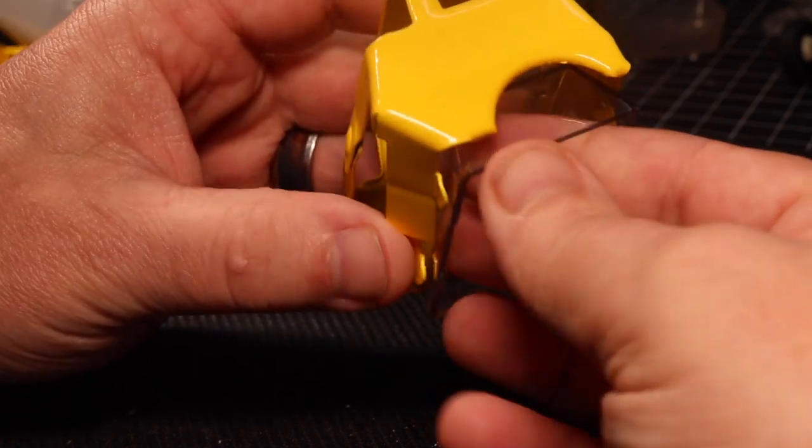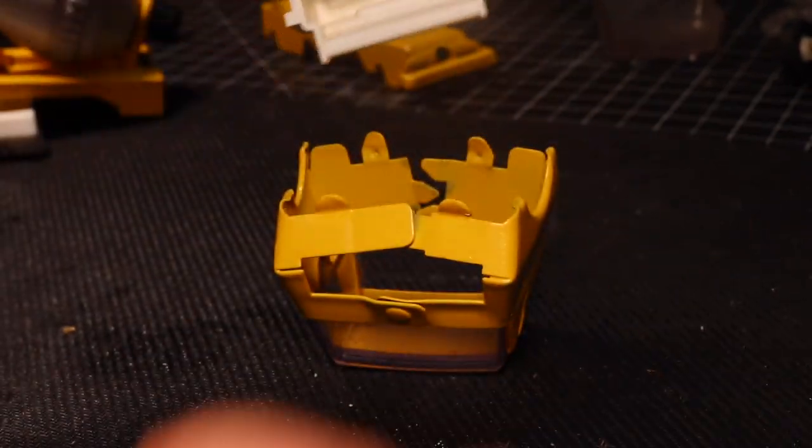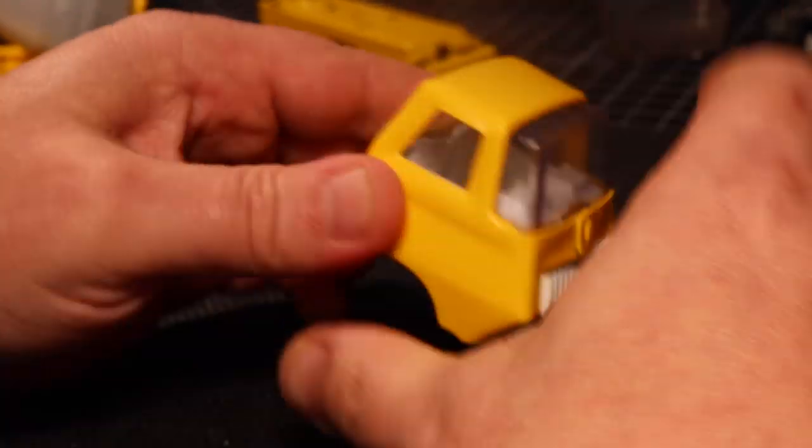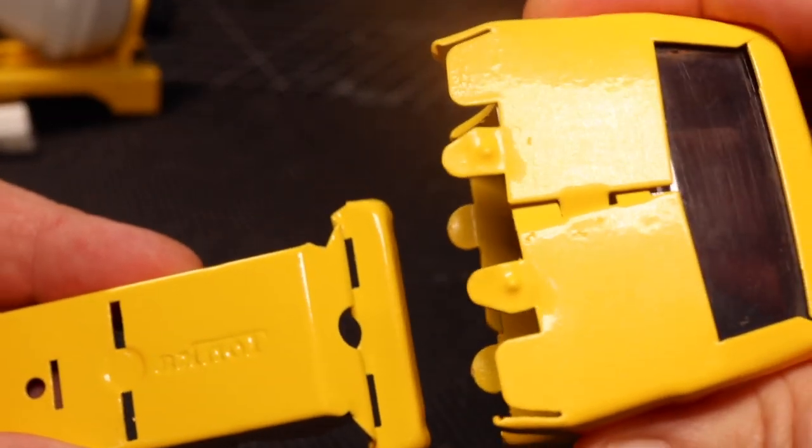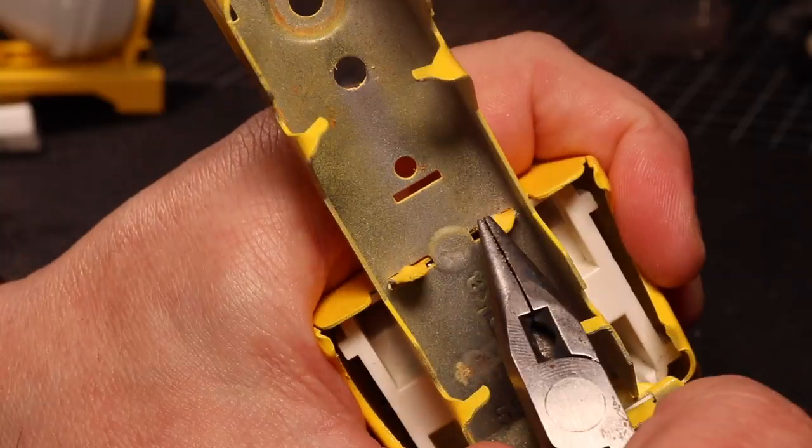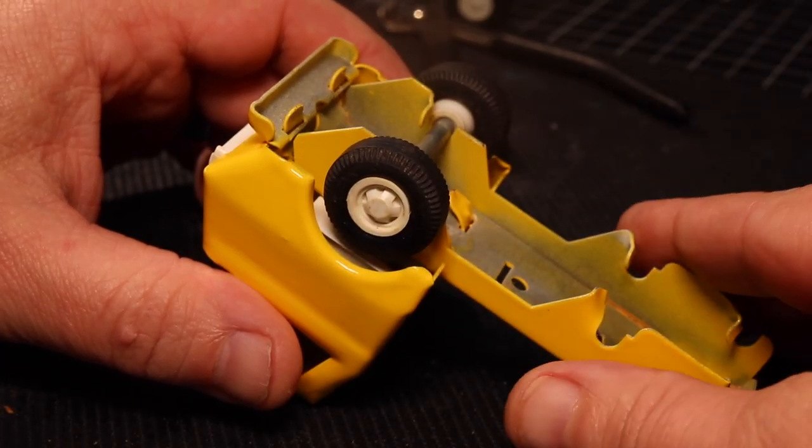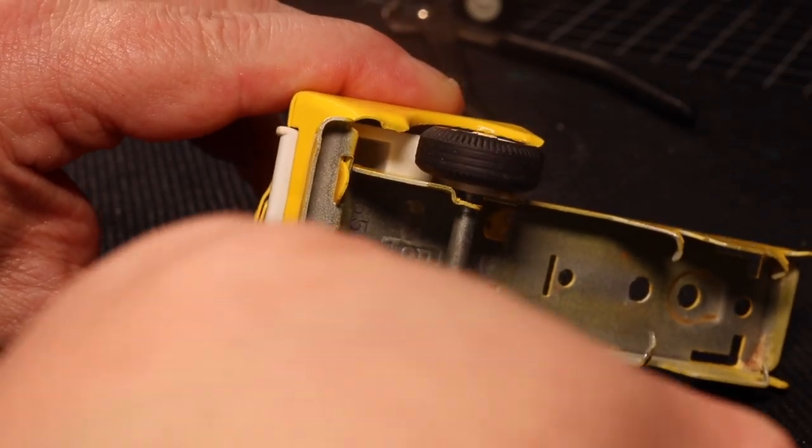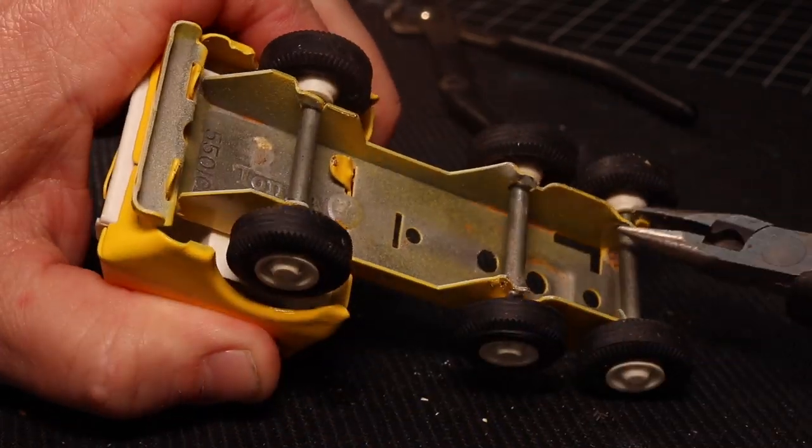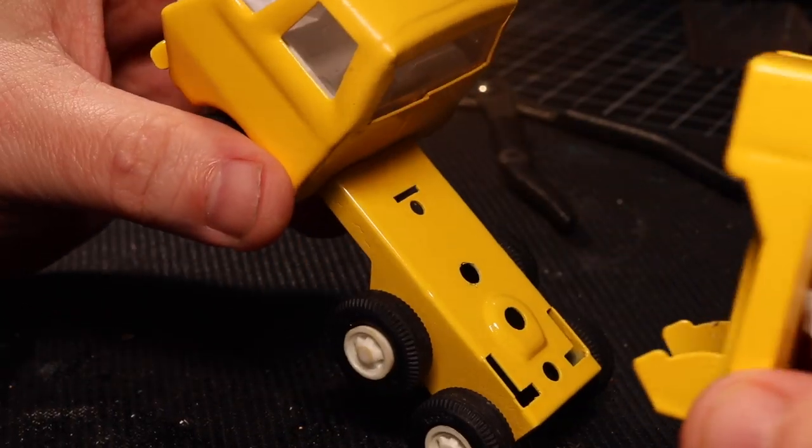Back to the assembly once again. We'll slide the window in place, followed by the interior. We'll slide the cab into place, and then bend back our tabs. Reinstall the three axles. Install the rear frame with the cement mixer, and bend those tabs back as well.